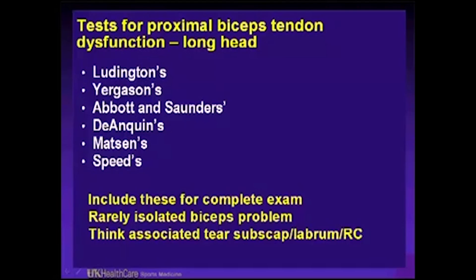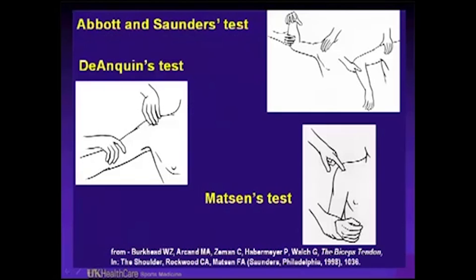We can describe what we're doing when performing these tests — basically we're rotating and wrapping up the biceps, creating pain in the bicipital groove. The Abbott and Saunders test involves a little axial load going into external rotation and then internal rotation while palpating the biceps. The Anquins test involves more of a supination, not quite as abducted. And Matson's test produces pain directly over the bicipital groove and the biceps proximally.